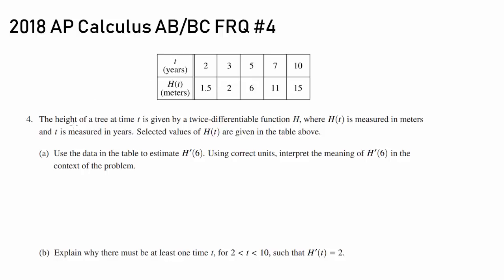Let's go on to number 4. The height of a tree at time t is given by a twice-differentiable function H, where H is measured in meters and t is measured in years. We have some tables of H(t).